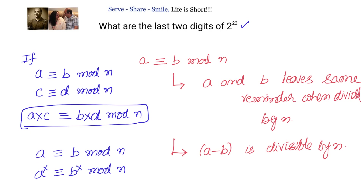This is true because a squared minus b squared, a cubed minus b cubed, a power 4 minus b power 4 — all of them are divisible by n, since all of them can be written as a product of something multiplied with a minus b. That is, a minus b is a factor of all of them. We will leverage all these properties to find out the last two digits of 2 power 22.